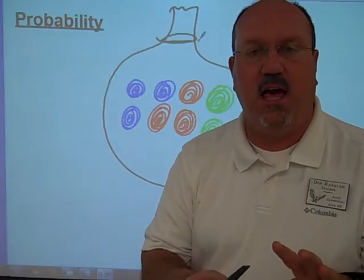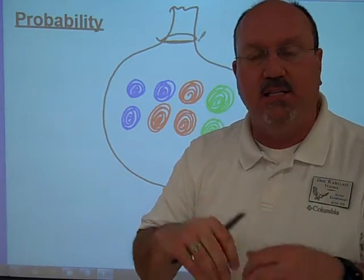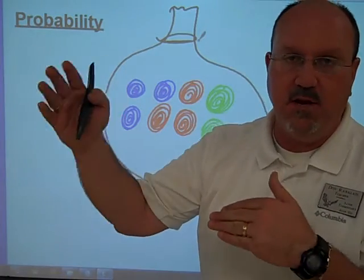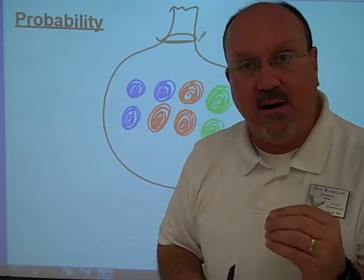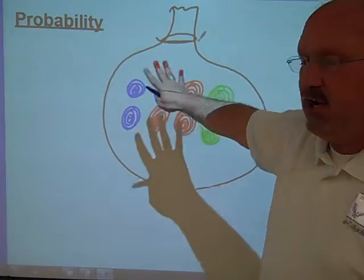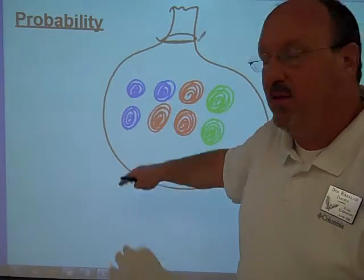Well, let me tell you what the trick to that is. First of all, it's always going to be a fraction. It's going to be one number out of something. The denominator of the fraction, the bottom number, is always going to be how many are in the whole. How many in the whole bag?